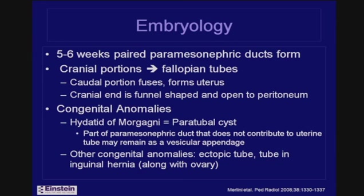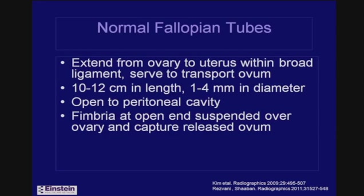Other congenital abnormalities include an ectopic tube, usually when the fallopian tube is in an inguinal hernia with the ovary. The normal fallopian tubes extend from the ovary toward the uterus within the broad ligament.